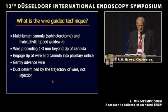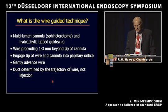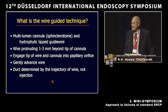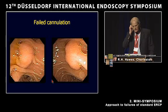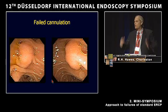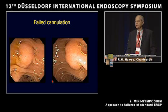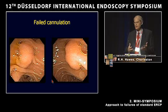The wire-guided technique uses a multi-lumen cannula — usually a sphincterotome — and a hydrophilic tip wire protruding about one to three millimeters beyond the tip of the cannula. You engage the tip of the wire and cannula into the papillary orifice, then gently advance the wire. The duct selected is determined by the trajectory of the wire, not by injection. For failed cannulation, there are a number of ways to overcome it — one demonstrated by Jacques today is placing a guide wire into the pancreatic duct to straighten the papillary area, allowing selective cannulation.